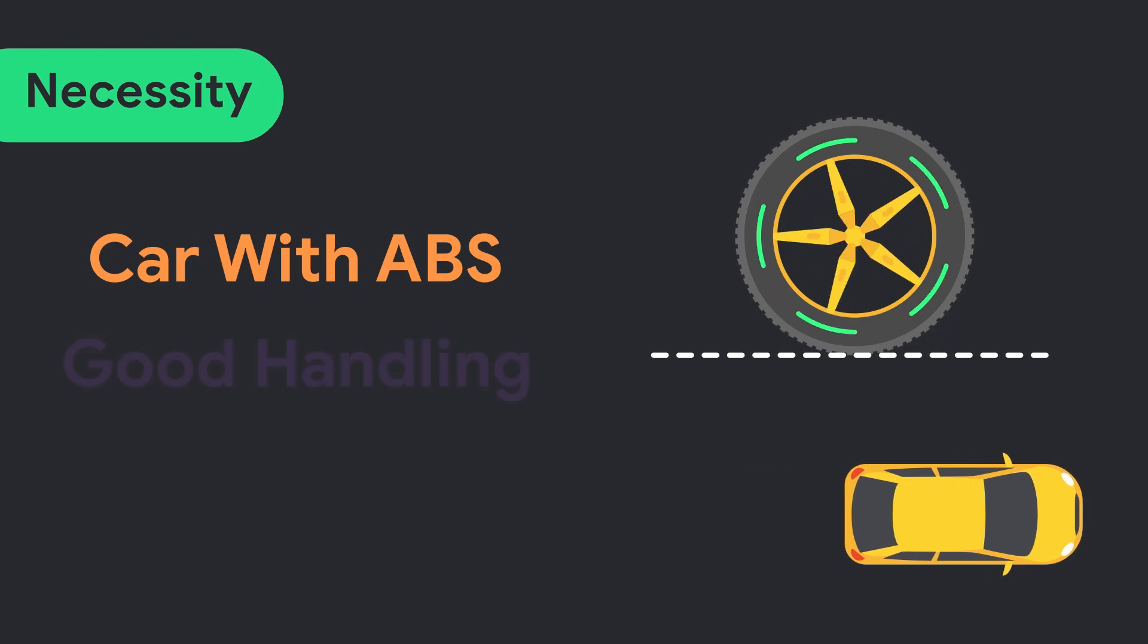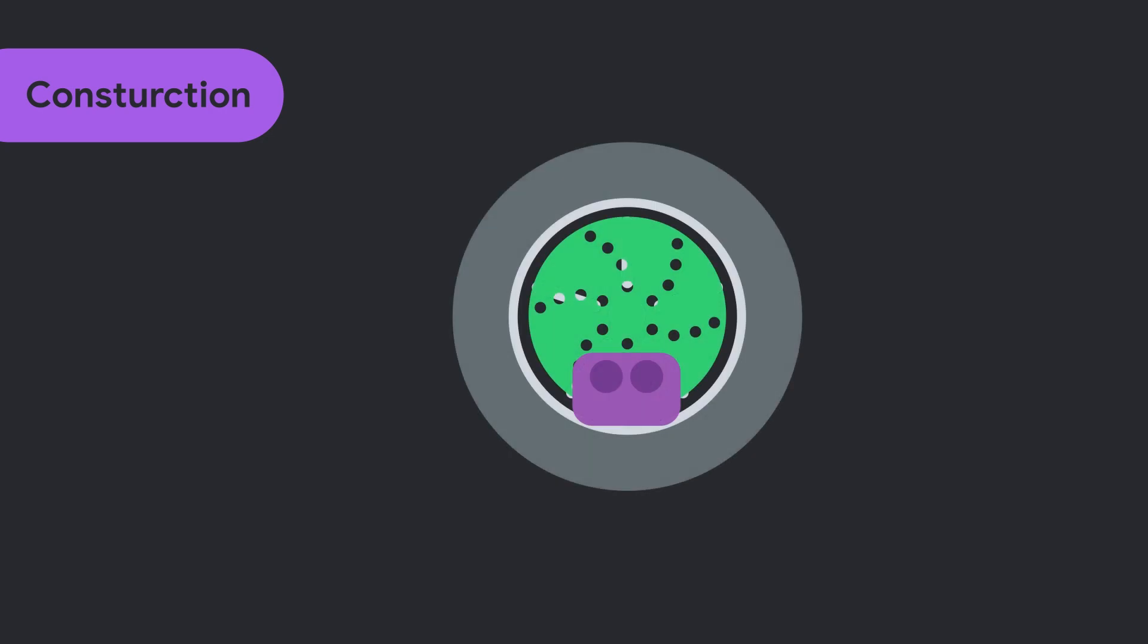ABS consists of wheel speed sensor, which is made of a tooth wheel and sensor element. Wheel speed sensor is equipped in every wheel which is connected with ECM.